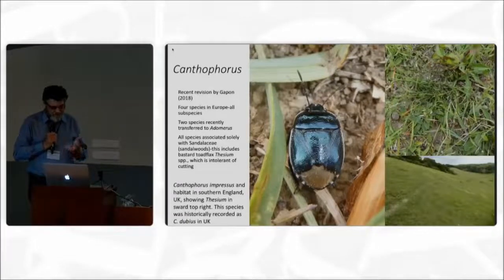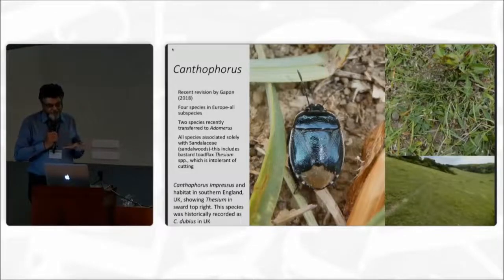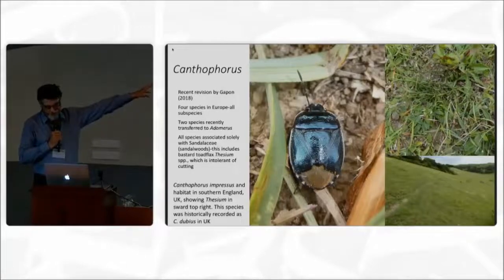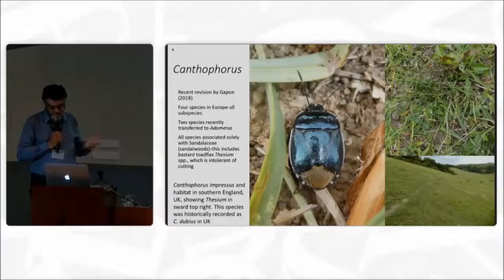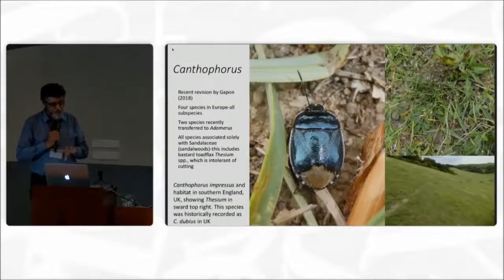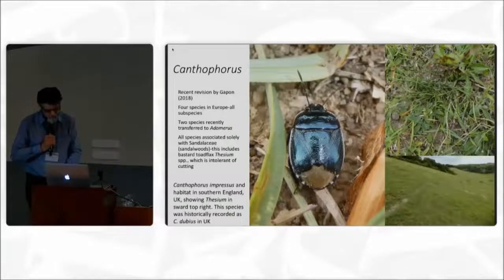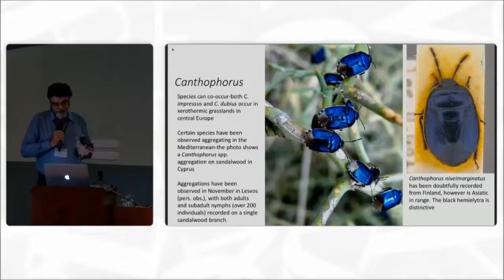Recent taxonomic changes added two new species of Adameris: Maculipes and Fuscapennis, formerly in Canthophorus. Both of these species feed on red valerian species in the Caprifoliaceae — a completely different plant family to Adameris bigotatus — so these species probably should not have been added to Adameris. Canthophorus sensu stricto was recently revised by Gapon; the remaining species in Canthophorus are strictly associated with Sandalaceae — sandalwood trees in the Mediterranean, and in northern Europe the tiny plant Thesium humifusum, or bastard toadflax, the sole host plant of Canthophorus impressus.